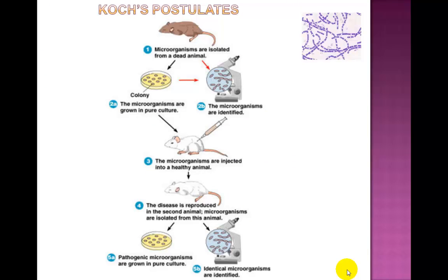How would you prove that a particular organism was the cause of a particular disease in an animal? How could you be sure you found the right microorganism and did not associate the disease with one of the millions of microorganisms that occur in an animal? This problem challenged scientists for decades. Eventually, Koch's postulates became the accepted scientific method for identifying the agent that caused a disease, and the following diagram summarizes Koch's postulates through an experiment with anthrax, showing how scientists still identify which microorganisms cause which disease.